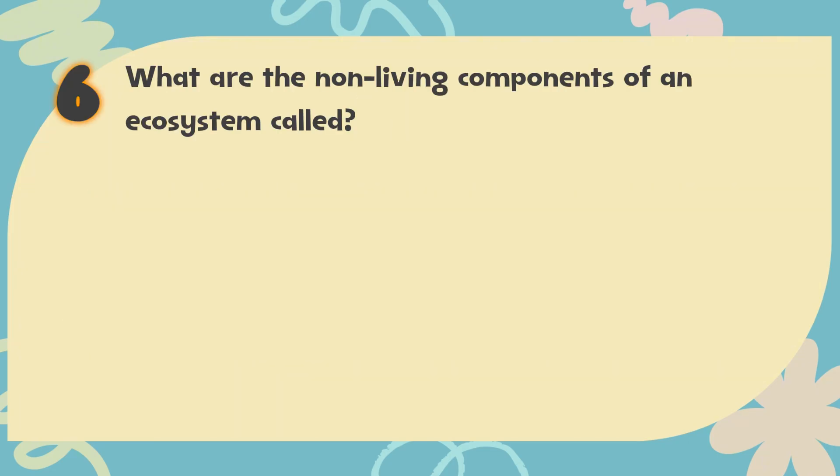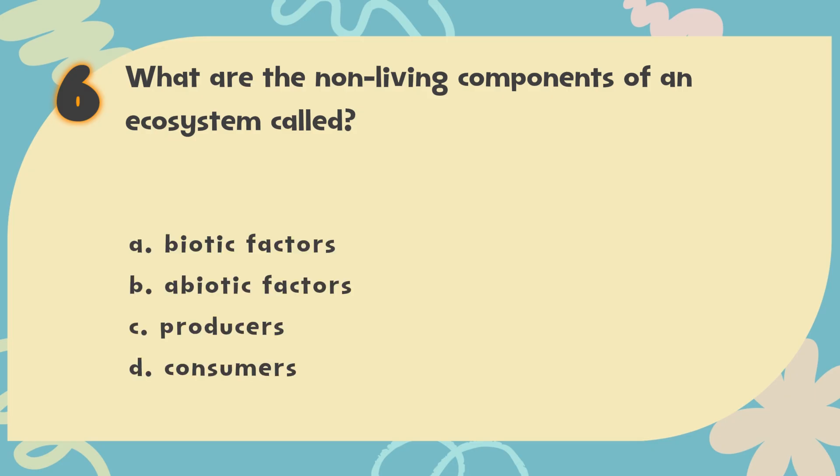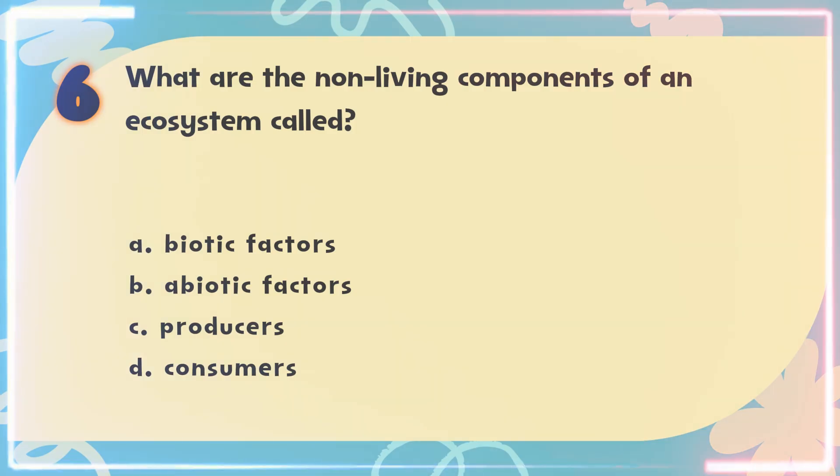Number 6. What are the non-living components of an ecosystem called? The choices are: A. Biotic factors. B. Abiotic factors. C. Producers. D. Consumers.